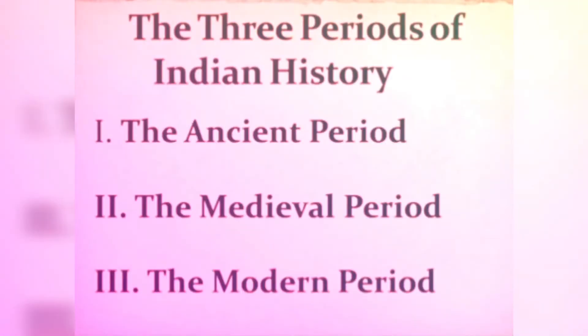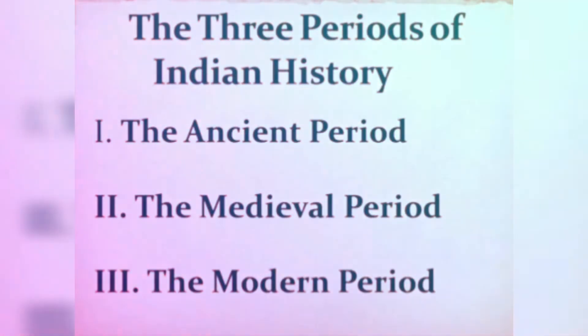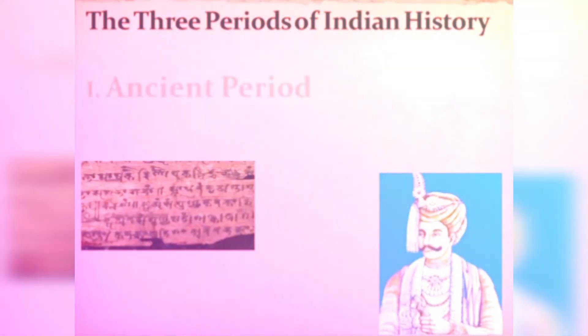Last year in class 6th, you learnt what is history. History is the study of human past. To understand history easily, it is divided into 3 parts: first is the Ancient period, second is the medieval period, and the third is the modern period. In class 6th, you learnt the first period — the Ancient period of Indian human history.